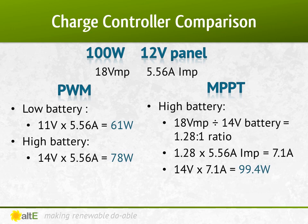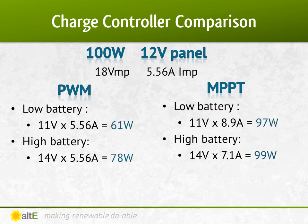If we do that same math for a fuller battery at 14 volts, the in-versus-out ratio is 1.28. So that increases the current from 5.56 amps to 7.1 amps. Multiply that times 14 volts — that equals 99.4 watts. So let's compare those two outputs with the same battery and same panel, just going from a PWM to an MPPT charge controller.